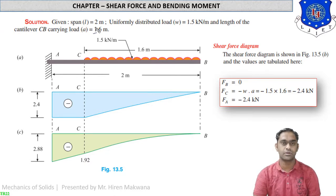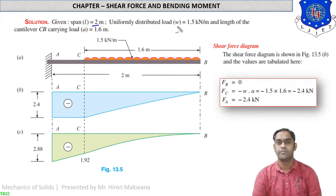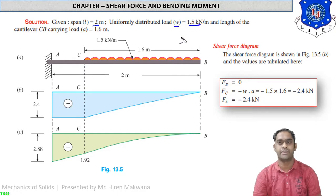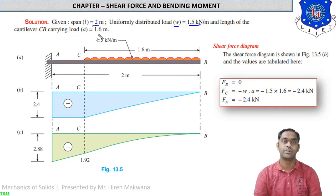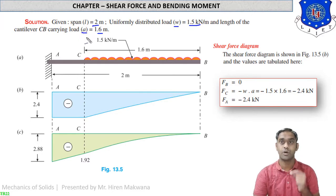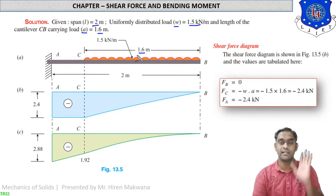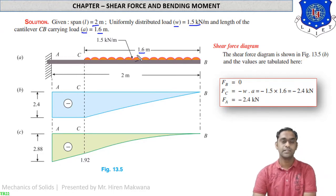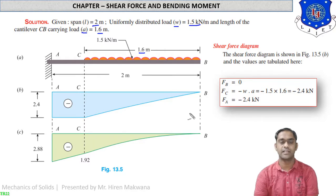What is the solution and given data: the span L is 2 meters, meaning total length of the beam is 2 meters. Uniformly distributed load W is 1.5 kN per meter. Length of the cantilever CB carrying the load is 1.6 meters, denoted by small 'a', and total length is L. Now we start the shear force diagram and calculate the values.